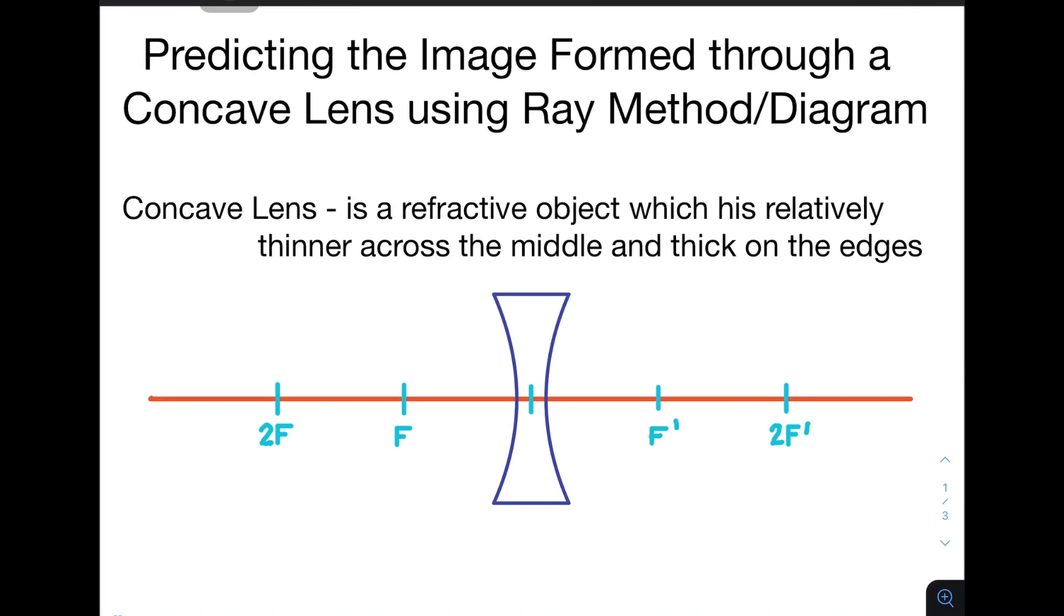Similar to the convex lens, the points around the concave lens are indicated as follows. We have the 2F, which is twice the focus, and the optical center, which is exactly in the middle of the lens. The focus prime on the other side and the 2F prime, which is twice the distance of the focus prime.